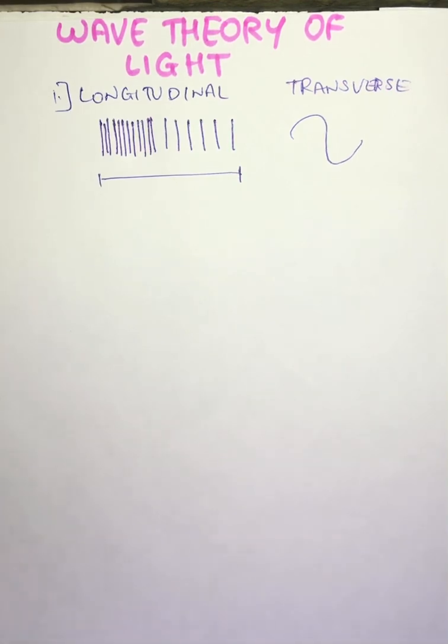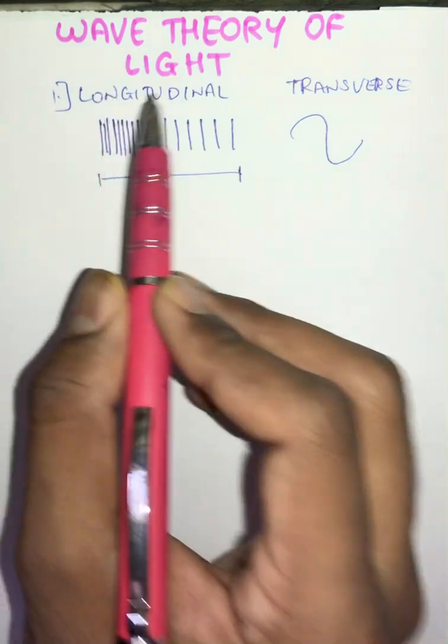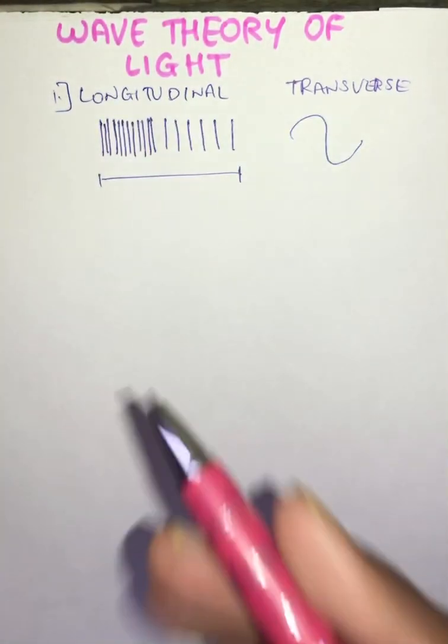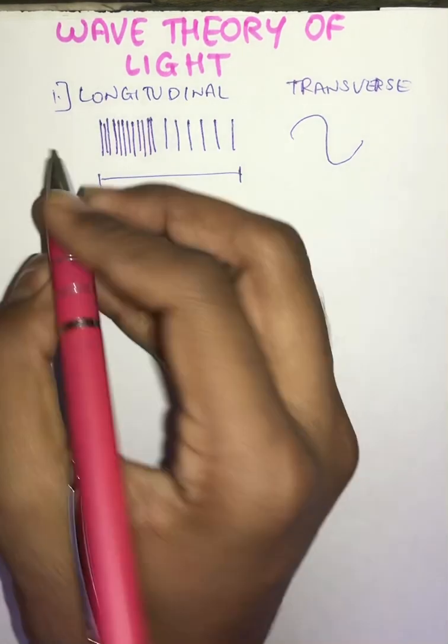This is a transverse wave, and it was proved that light does not travel in the form of longitudinal waves but travels in the form of transverse waves. According to the second characteristic of wave theory of light...